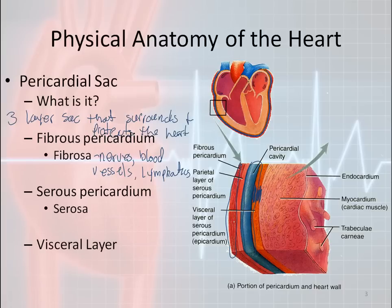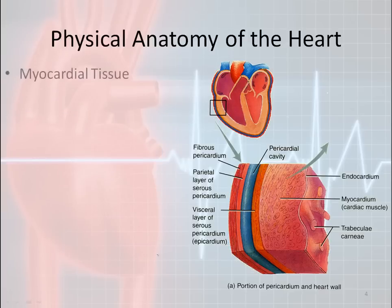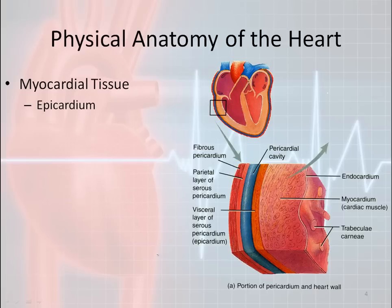The innermost layer of the heart is called the visceral layer, but it's also known as the epicardium — you might hear both terms. The epicardium is the outermost layer of the heart tissue itself, and it also helps maintain lubrication between the heart and the pericardial sac.